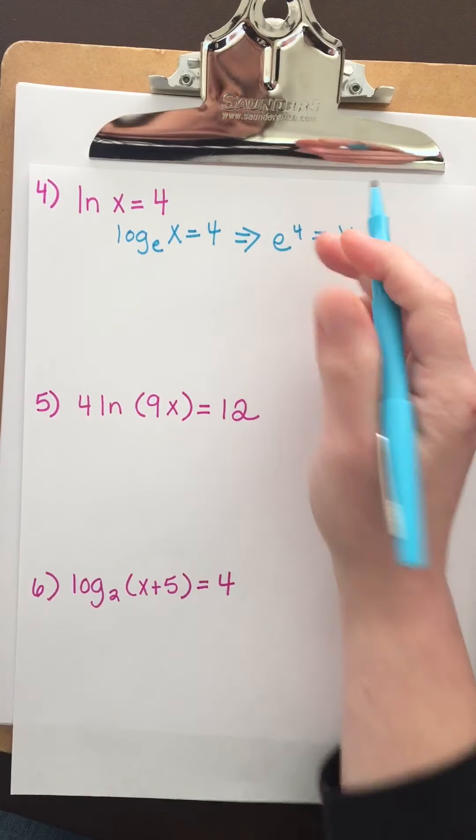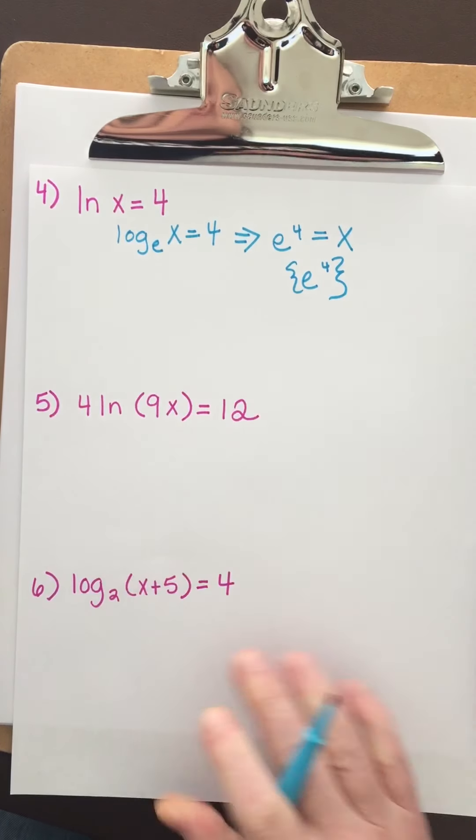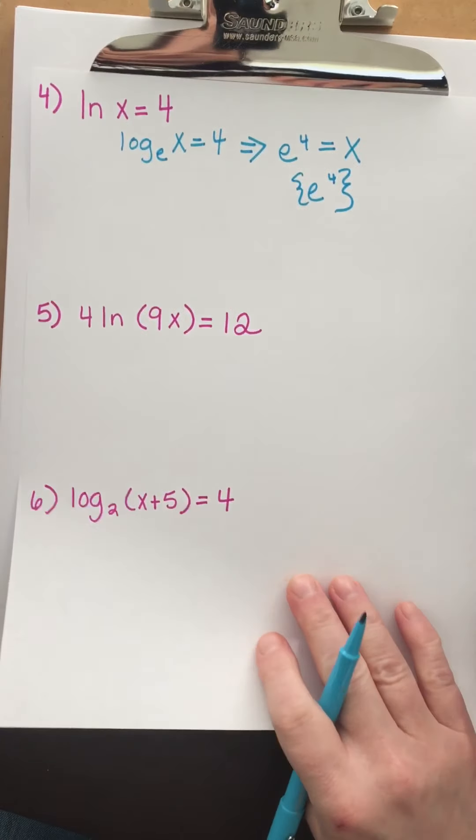E to the 4th is definitely a positive number, so that's the solution. Let's look at another example with natural log.